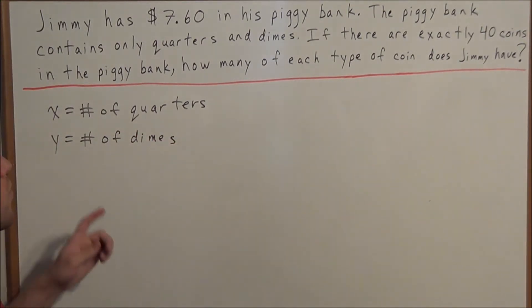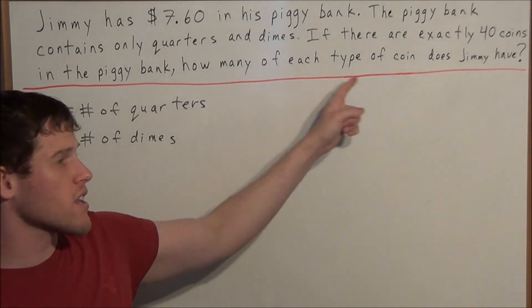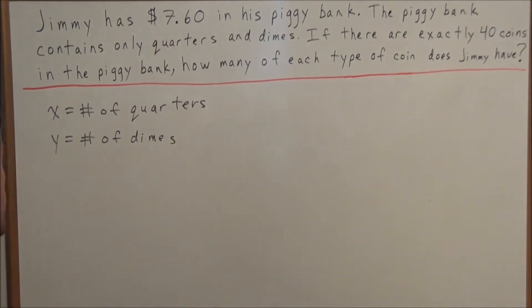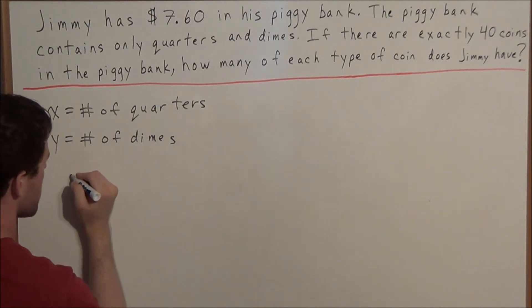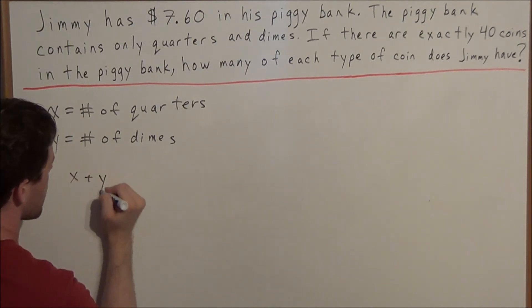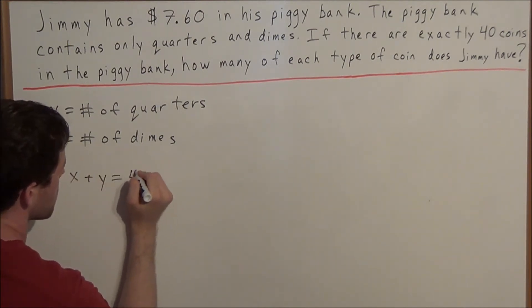So now what do we know? What information was given to us? We know there are exactly 40 coins in the piggy bank. So if we add the number of quarters and dimes, we can set that equal to 40 because there are only quarters and dimes in this piggy bank. So we can say x plus y is equal to 40.